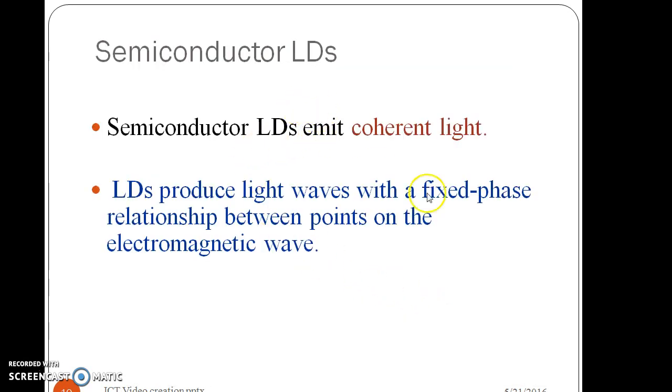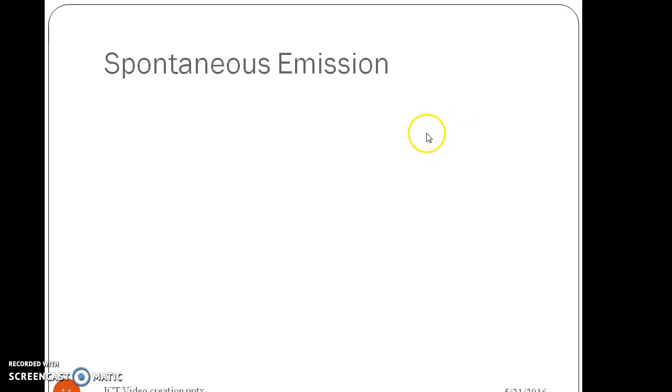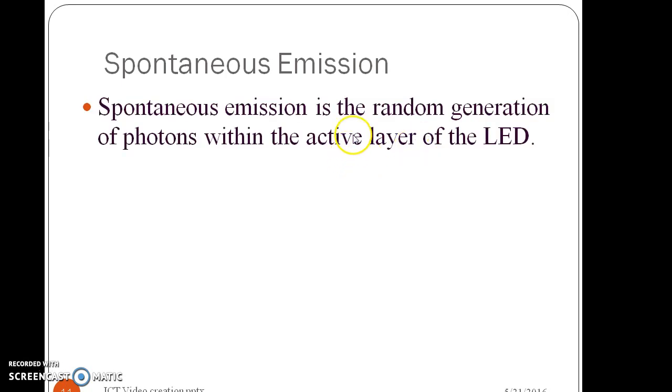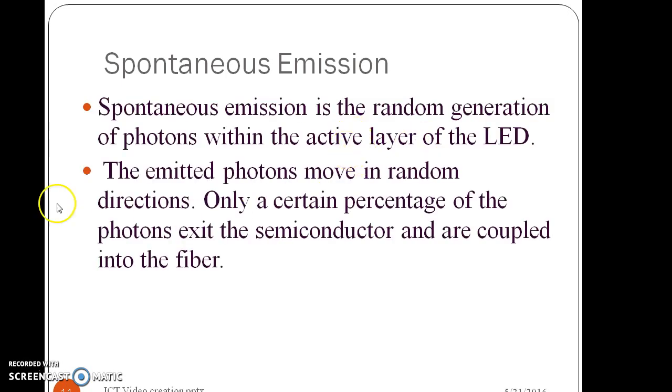Semiconductor laser diodes are known as coherent source of light as the number of photons emitted are all in same phase and in coherence. The spontaneous emission being taken place in LED is known as random generation of photons, where all the photons are not in same phase.